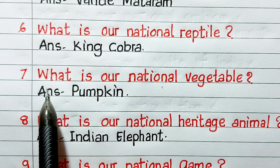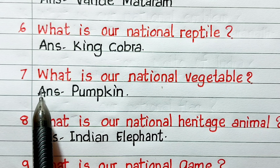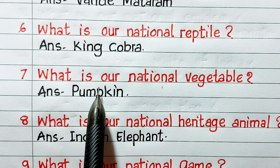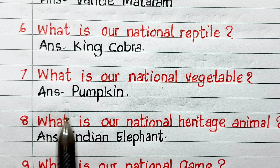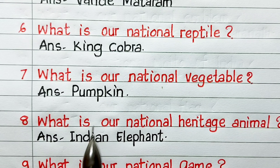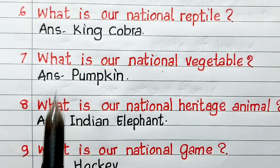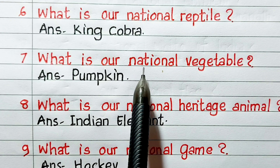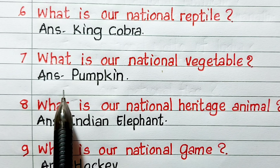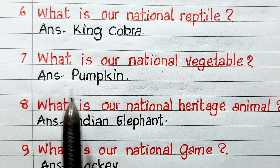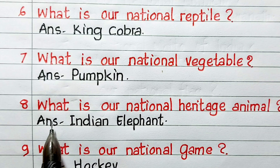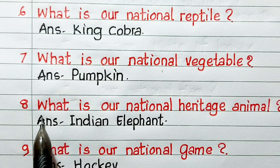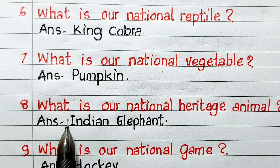Next one, what is our national reptile? Answer: king cobra. Next one, what is our national vegetable? Answer: pumpkin.